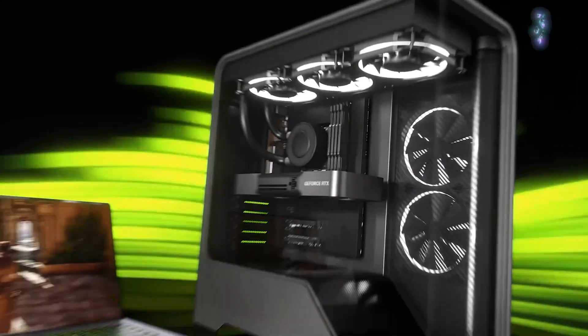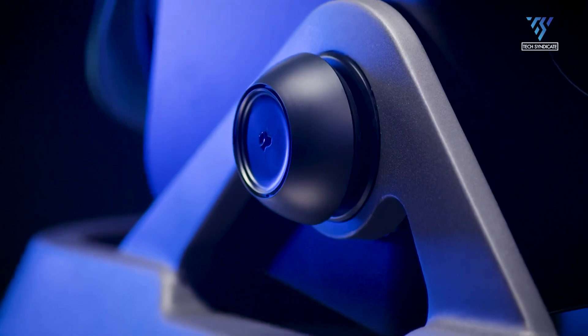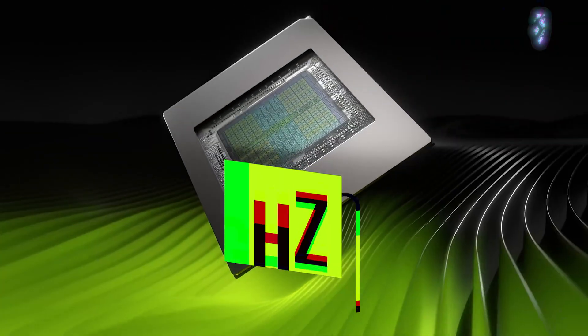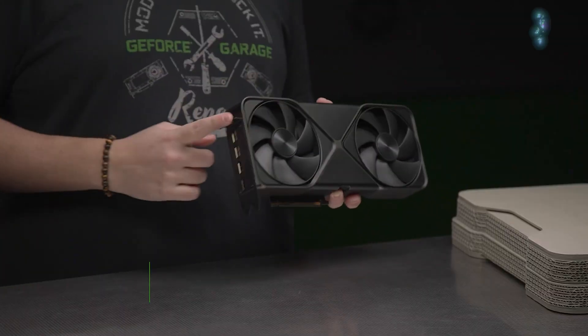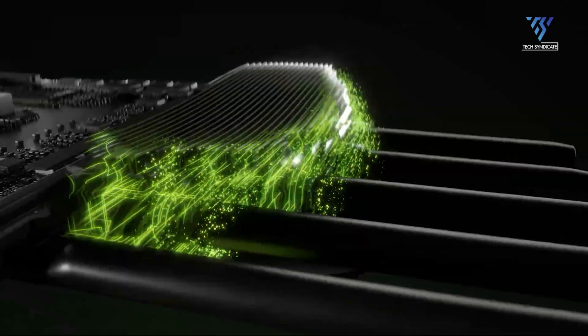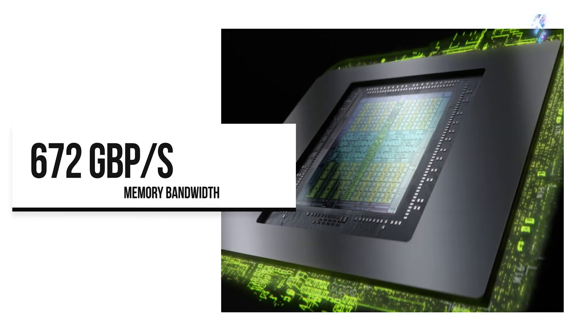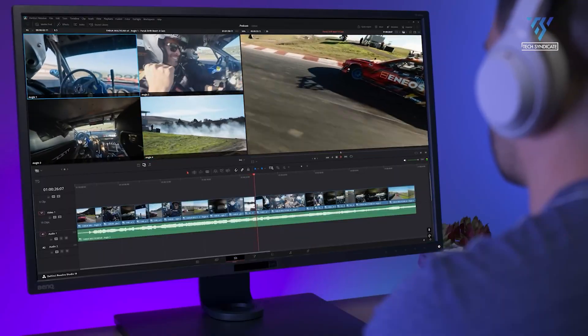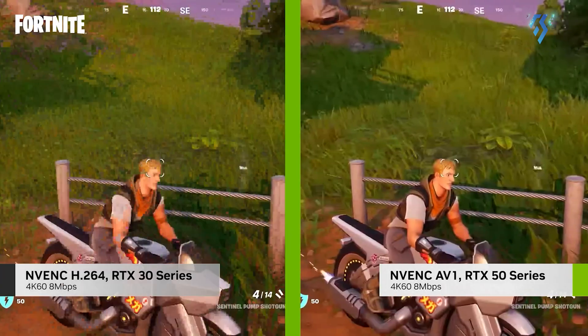The RTX 5070 comes equipped with 6,144 CUDA cores and operates at a base clock of 2.16 GHz, boosting up to 2.51 GHz. It features 12 GB of next-generation GDDR7 memory on a 192-bit bus, delivering 672 GB per second of memory bandwidth. The card includes one 9th generation NVIDIA encoder and one 6th generation decoder, supporting advanced features like AV1 encode and decode.